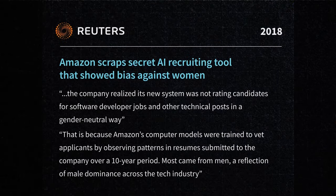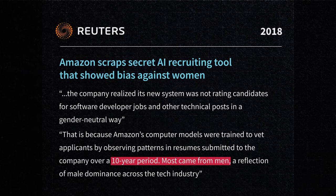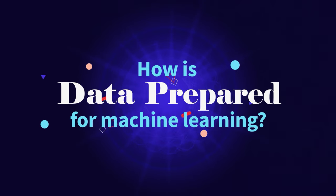In the case of Amazon, models were trained on 10 years' worth of resumes submitted to the company, for the most part, by men. So, here's another million-dollar question. How is data prepared for machine learning?